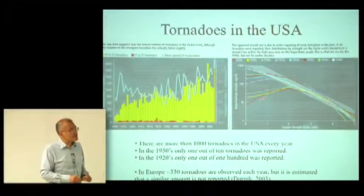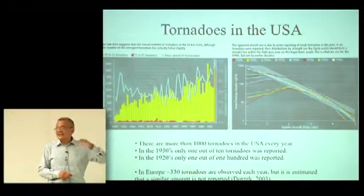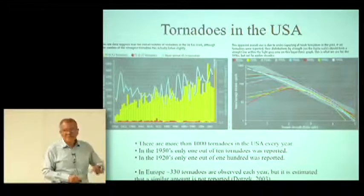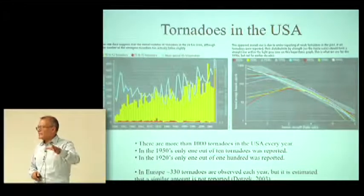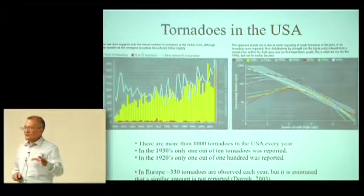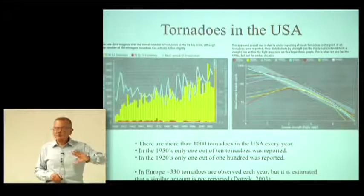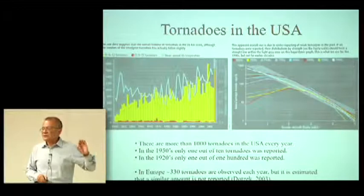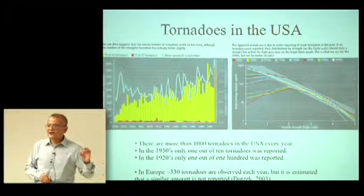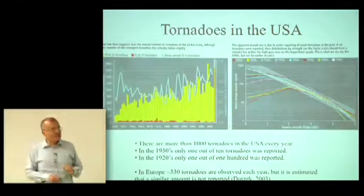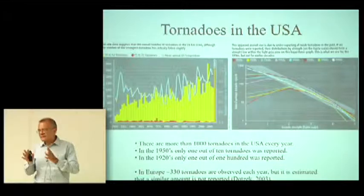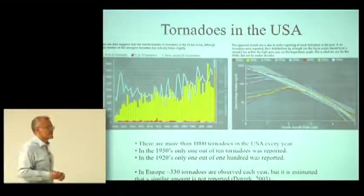But that doesn't happen as you go farther back in time — the curve becomes more pronounced. This means that the further back in time you go, the weaker tornadoes are under-reported, while the strongest tornadoes are not under-reported. That seems logical.